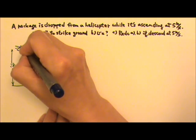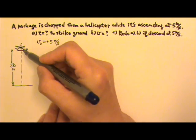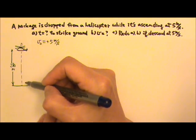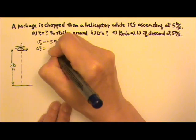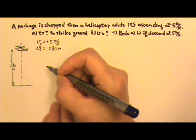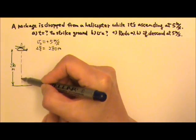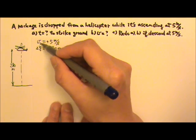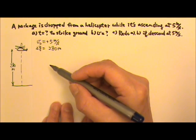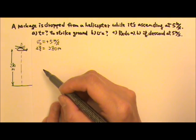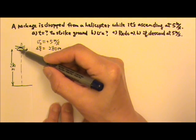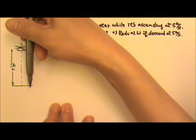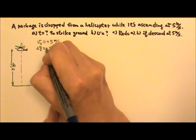The package goes up before coming down. At the moment of the release, the helicopter is 280 meters above ground, so 280 meters is the displacement delta Y. The distance traveled by the package is more than 280 meters, but we don't have to worry about that because in our equations we have delta Y — the displacement, not the distance traveled. Delta Y is the change in position, a vector, so it has a direction. The position starts here, ends there — the change in position is a downward 280 meters, and therefore it is negative.